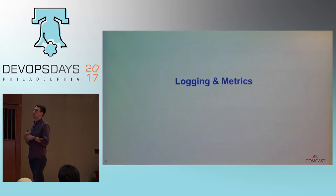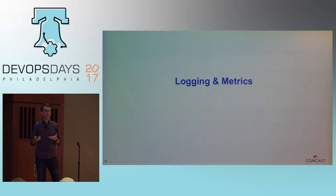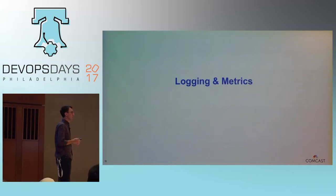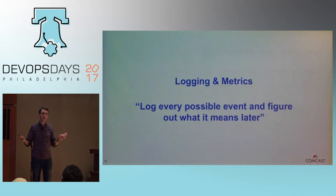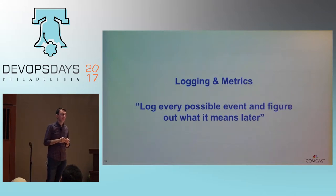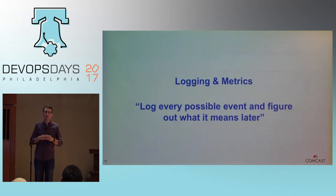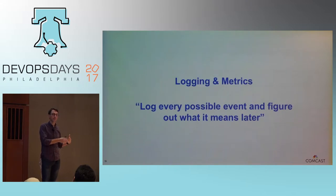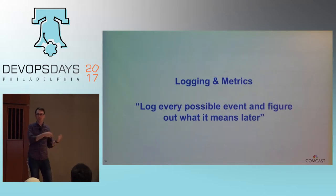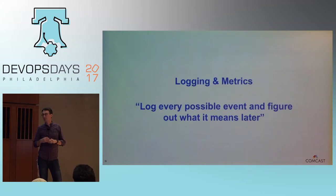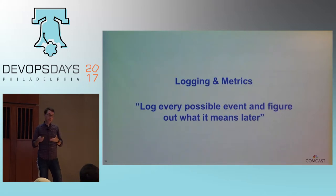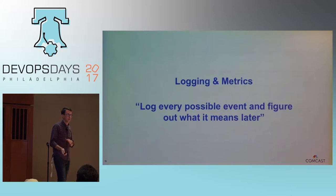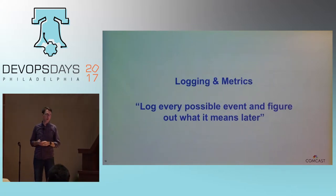Logging and metrics were more of an afterthought — the motto was log everything and figure out what to do with it later. The collection of metrics and alerting on the application was a Perl script that someone wrote, running every five minutes to scrape all the logs and send that data somewhere. If it ever crashed, we'd get woken up in the middle of the night. Everything got stuck into an Elasticsearch instance for troubleshooting, but tying metrics to logs was something we wanted to move away from.